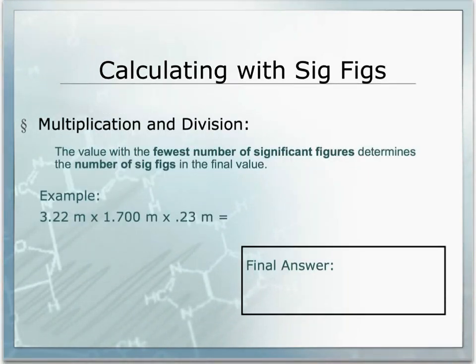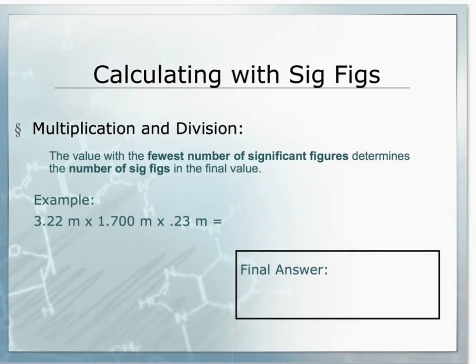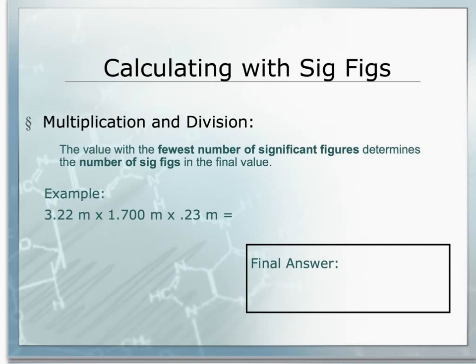When doing calculations of multiplication and division, we are going to be evaluating the number of sig figs in the measurements that we are multiplying or dividing. With multiplication and division, the value with the fewest number of significant figures determines the number of sig figs in the final value. Looking at our example, put all those values into your calculator and calculate the answer. The calculator will produce the answer of 1.25902 meters cubed.